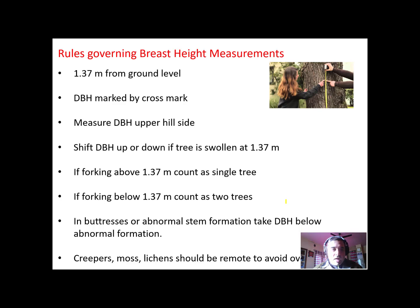If a tree is on a hill, you have to take DBH on the upper hillside. If a tree is swollen, you have to take the measurement below or above the swollen portion. If forking starts above 1.37 meters, count it as a single tree. If forking starts below 1.37 meters, count them as two separate trees for measurement of diameter or girth.